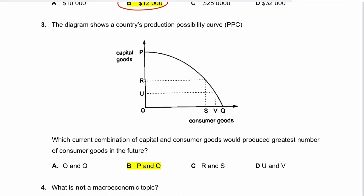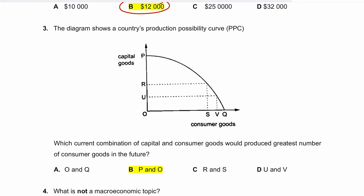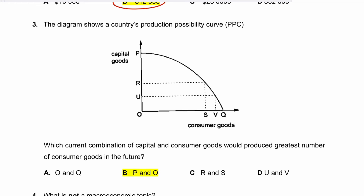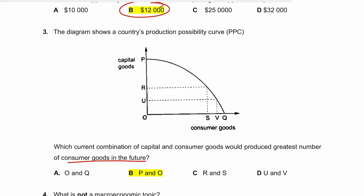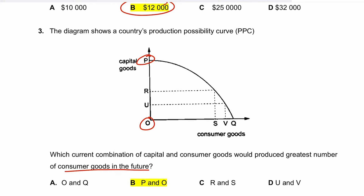Question three: the diagram shows a production possibility curve. Which combination of capital and consumer goods would produce the greatest number of consumer goods in the future? The answer is that if we focus all resource allocation on producing capital goods and produce zero consumer goods now, we maximize capital goods production. In the future, this increases productive capacity, since capital goods are man-made goods that produce other goods like consumer goods. The correct answer is P and O — zero consumer goods and maximum capital goods.